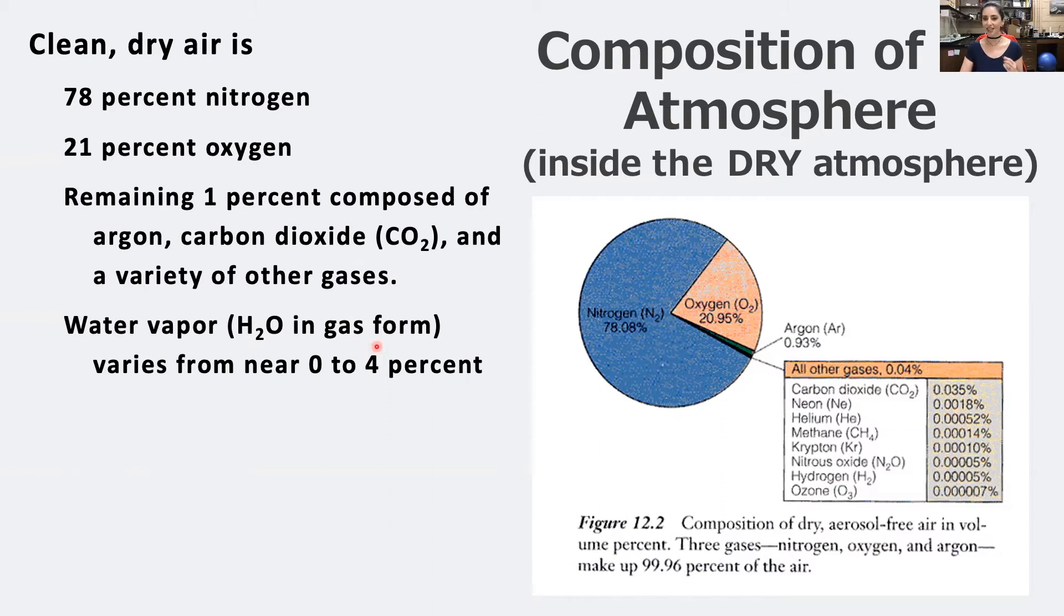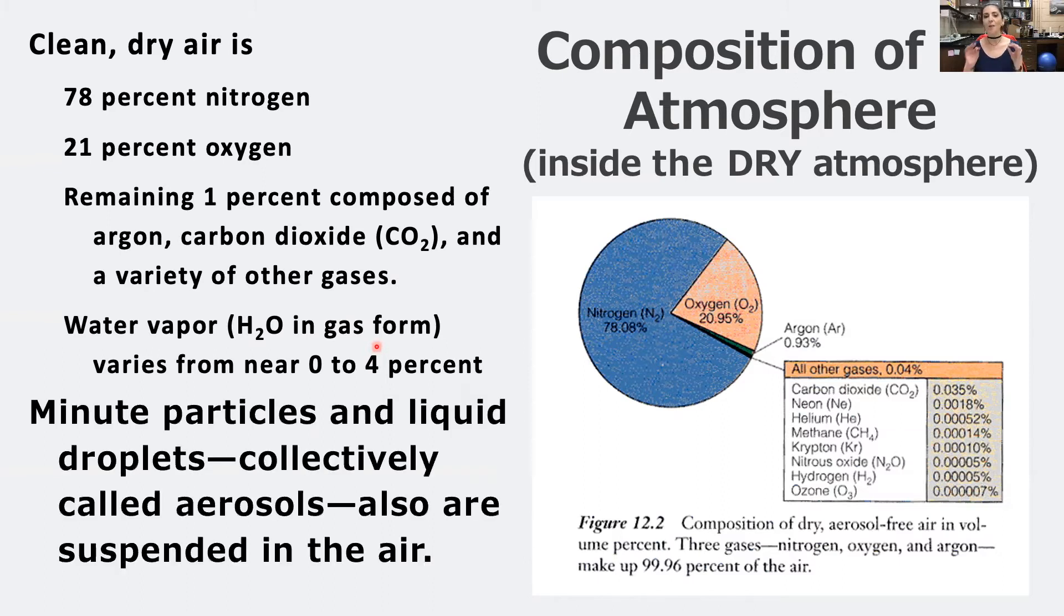Water vapor varies depending upon where you are in relation to the poles. Either 0 to 4% of the air is composed of vaporous water. We also have minute particles as well as liquid droplets. Together we call these aerosols, and these aerosols are just suspended in the air. These can come from a variety of different sources, including burning of fossil fuels but also natural sources like volcanoes.